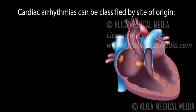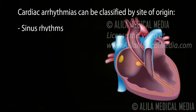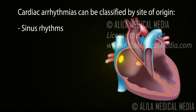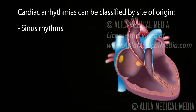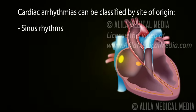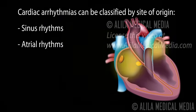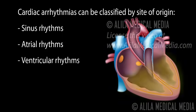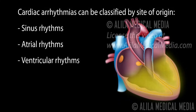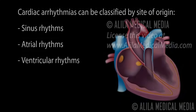Cardiac arrhythmias can be classified by site of origin. Sinus rhythms originate from the sinoatrial node or SA node. Atrial rhythms originate from the atria. Ventricular rhythms originate from the ventricles.